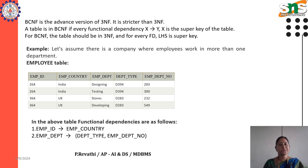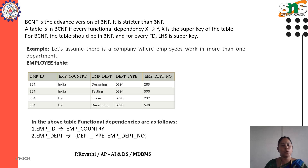What is Boyce-Codd Normal Form? Boyce-Codd Normal Form is a normal form that applies to relational databases that have a primary key, which is a column or a combination of columns that uniquely identifies each row in a table. Boyce-Codd Normal Form states that every non-key column in a table should depend on the whole primary key and not on any subset of it.